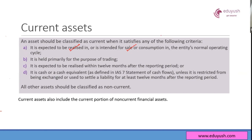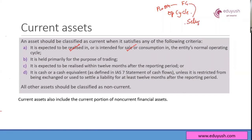Can anyone tell me what's the operating cycle? It is the time taken from converting your raw material to finished goods — purchasing raw material, converting it to finished goods, selling in the market, getting your cash, then purchasing raw material again. This is a normal operating cycle.